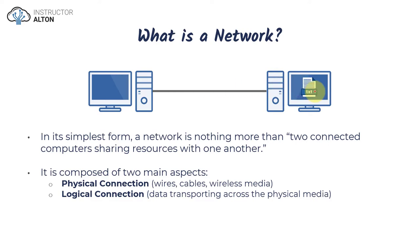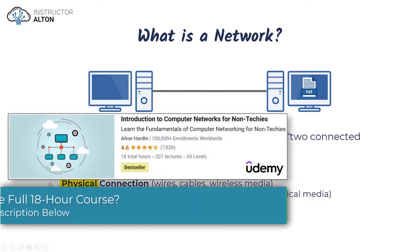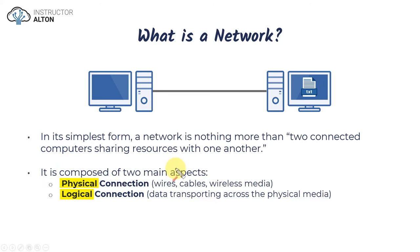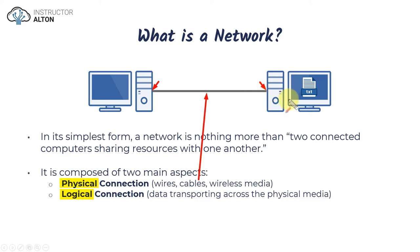Taking this a step further, when we talk about computer networks there are two primary aspects: a physical connection and a logical connection. When we're talking about the physical connection, we're talking about the wires, the cables, and if it's wireless, the wireless media. In this example it's nothing more than this network cable connecting the two computers. On the back of each computer there is a network interface card that this cable plugs into, allowing them to communicate back and forth.